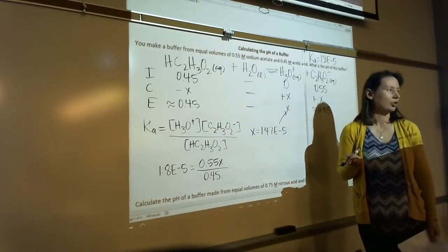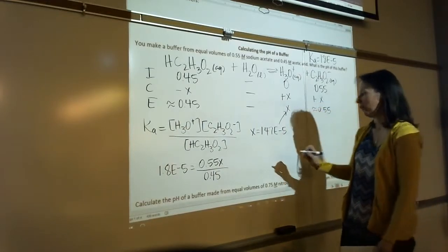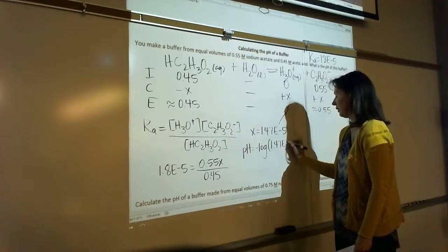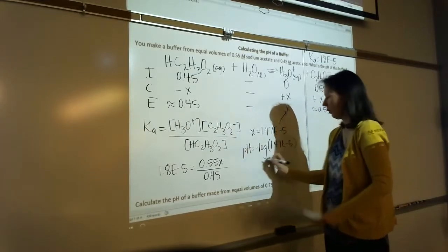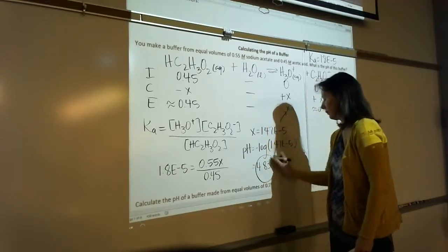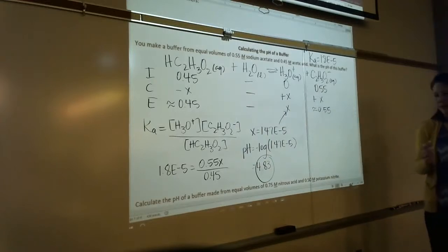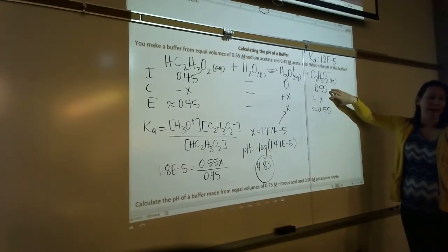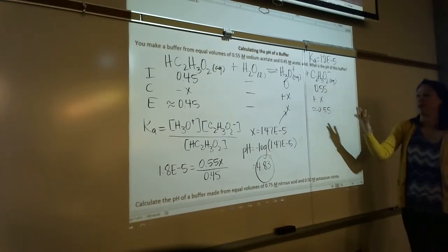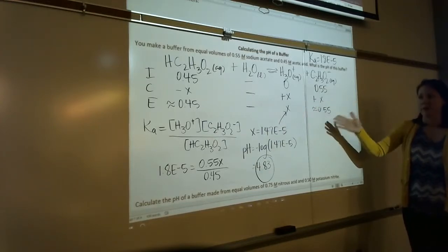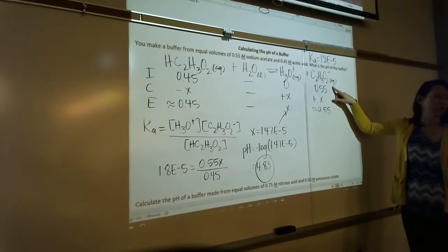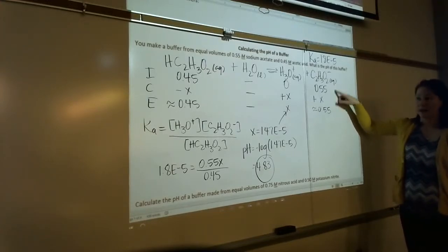So how would I get pH? Just take the negative log of that. So pH is the negative log of 1.47 × 10⁻⁵, and I got 4.83. The only difference between a weak acid calculation and a buffer calculation is that the buffer contains the salt. For a weak acid, the initial acetate concentration would be zero. I have to give you the concentration — that's why this value is not zero. Weak acid and its conjugate base — both of them have to be there in order to have a buffer.